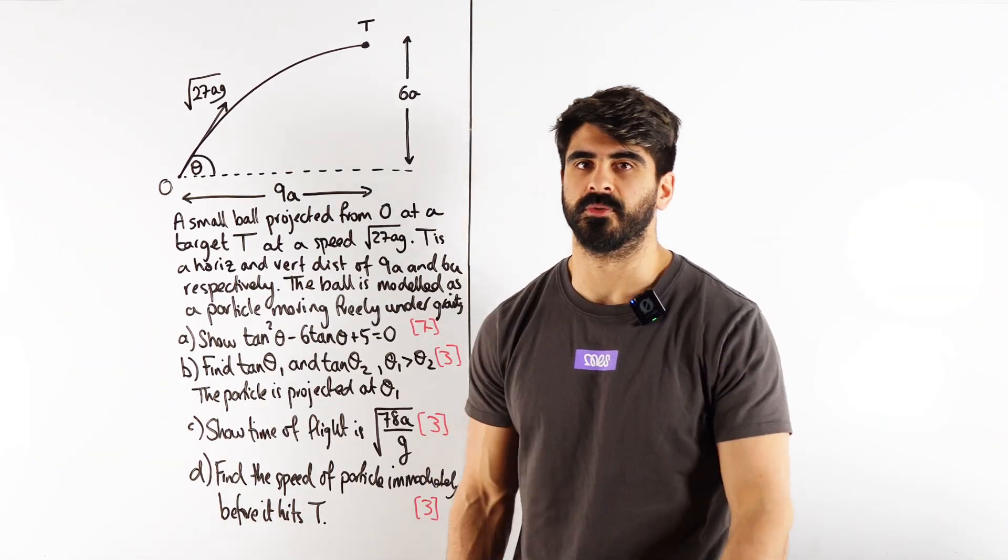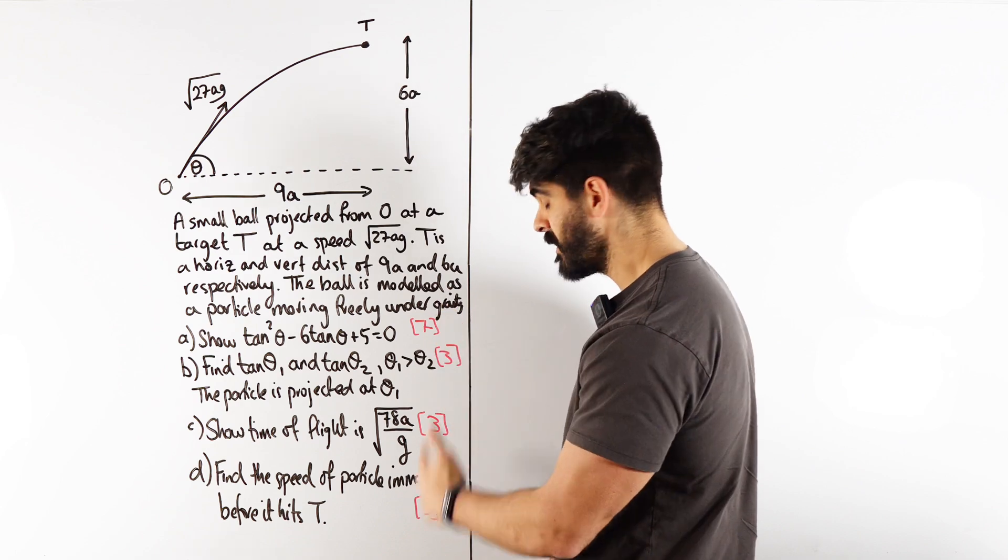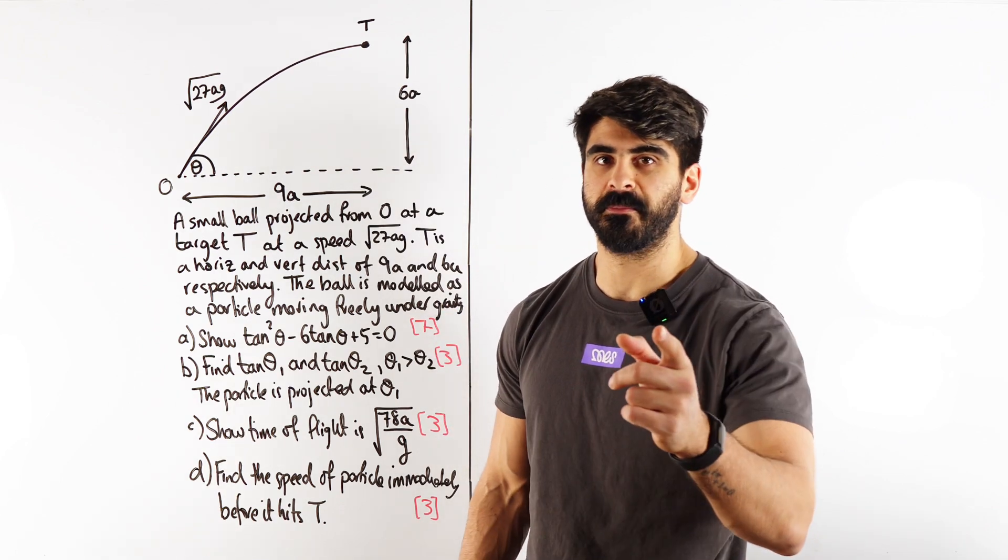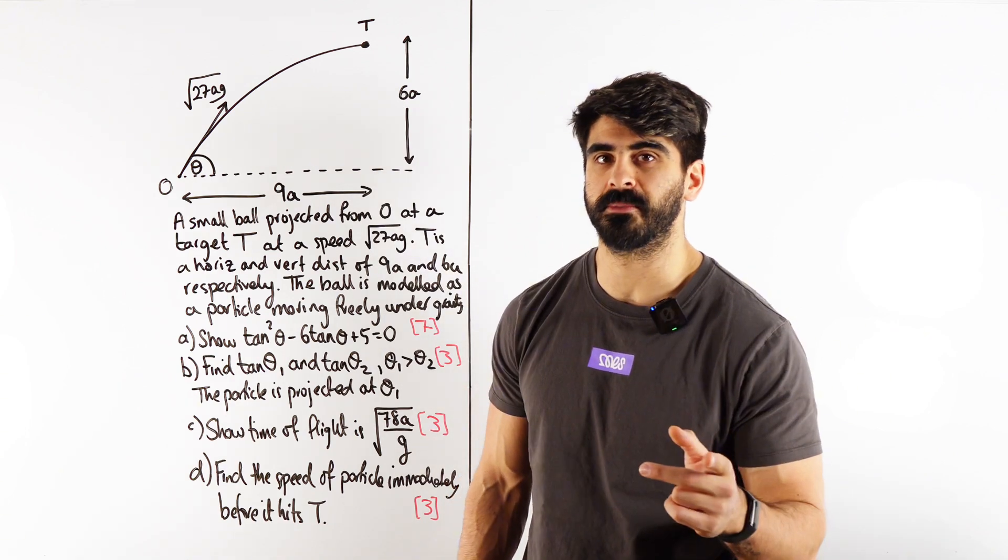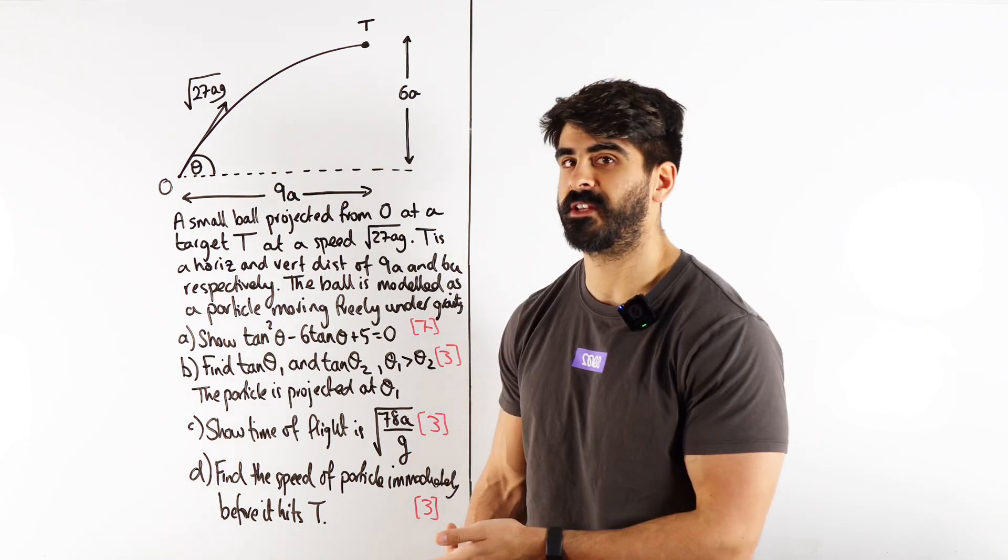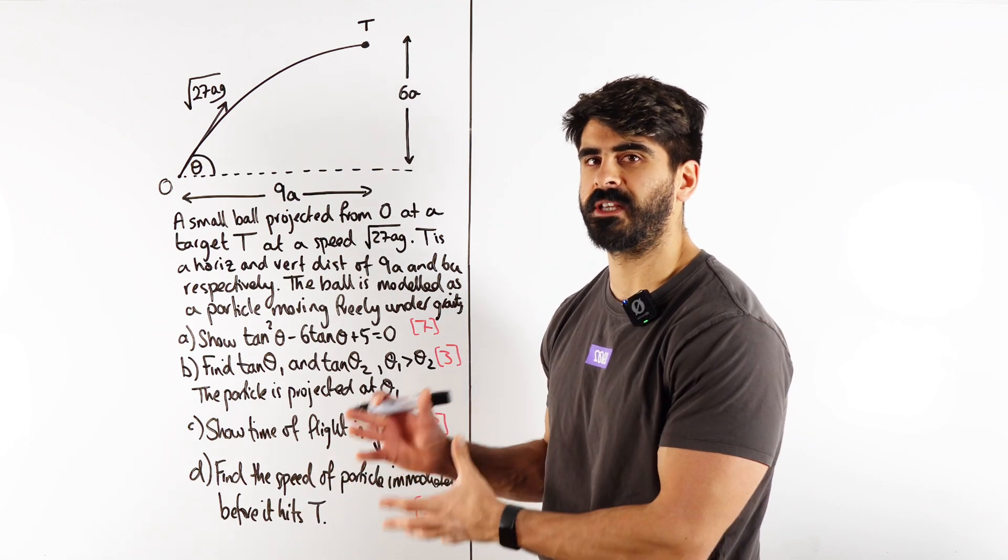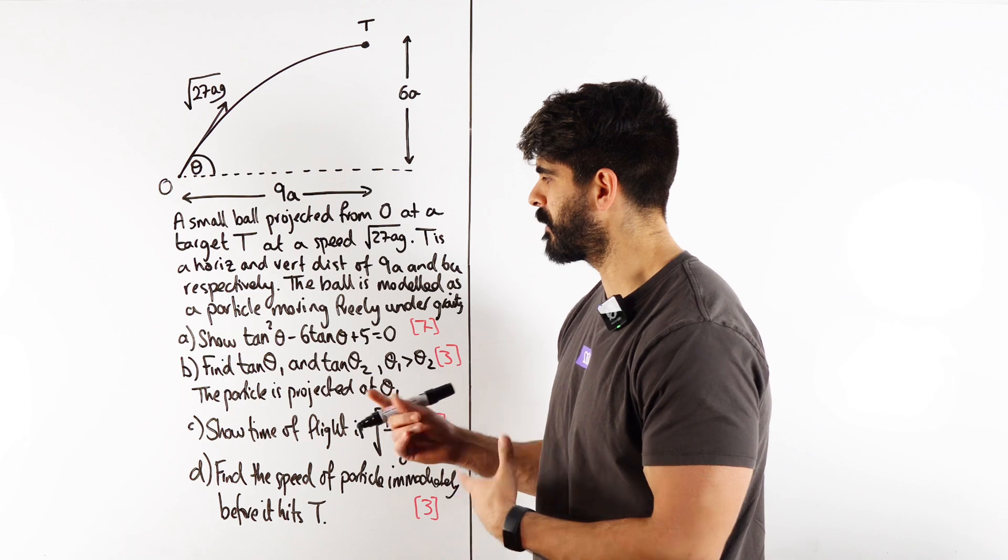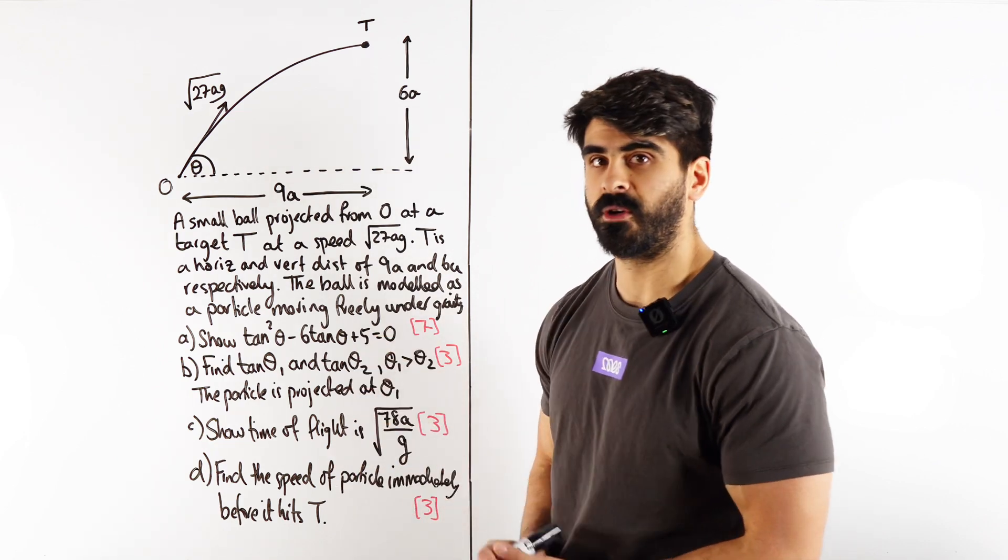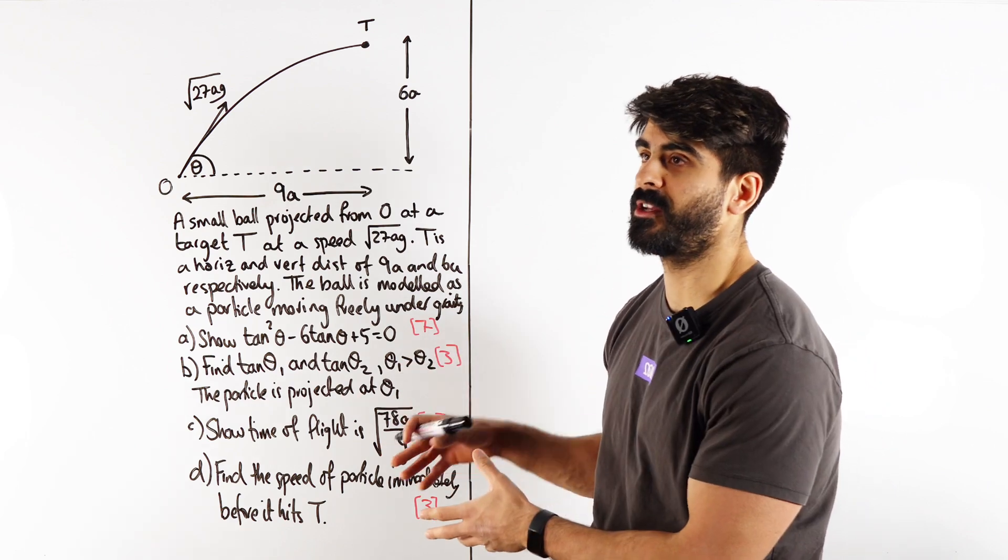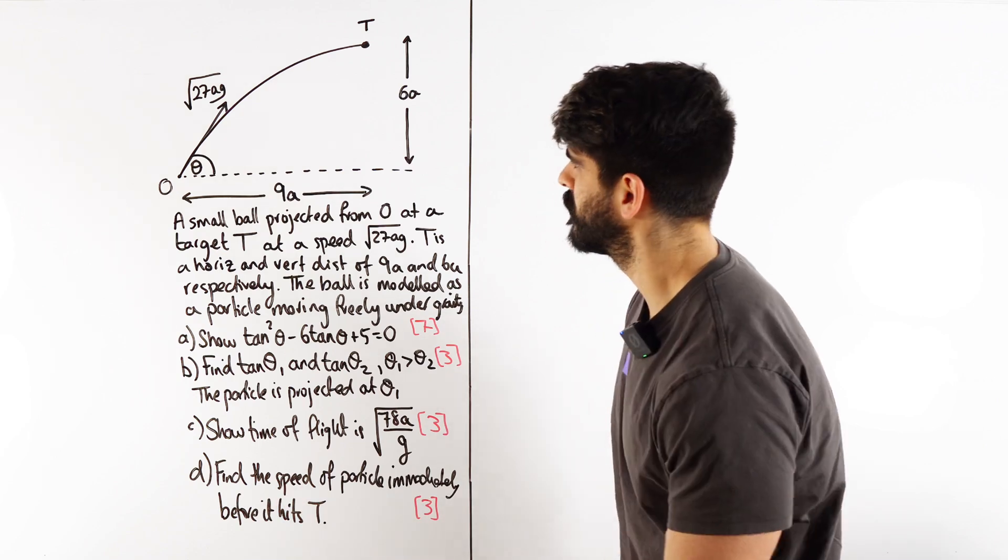Projections at any angle. Now this one is a tough one - 16 marks. Keep in mind these questions used to be in the old spec M2 papers which allowed you to use conservation of energy principle, which makes some of the parts a lot easier. But we don't learn that anymore in normal maths. We can still apply the concepts we learn in normal maths to still solve the problem. So let's see how we address that.